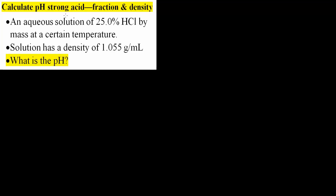In this video, we will calculate the pH of a strong acid. This problem will involve fraction and density. An aqueous solution of 25% HCl by mass at a certain temperature — HCl is a strong acid. The solution has a density of 1.055 grams per mL. We want to know what is the pH.